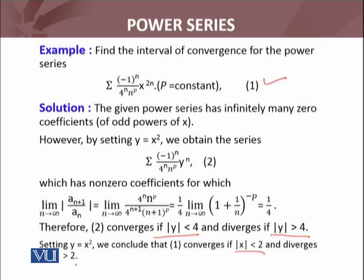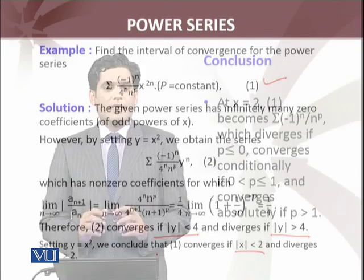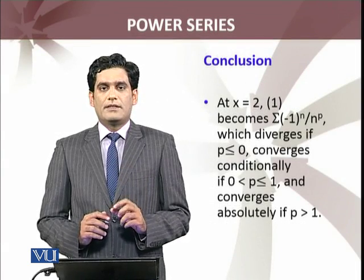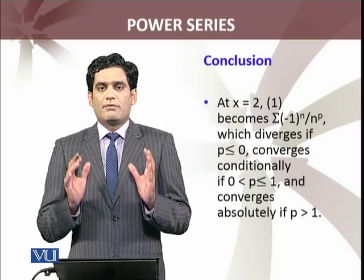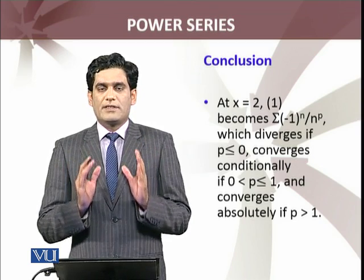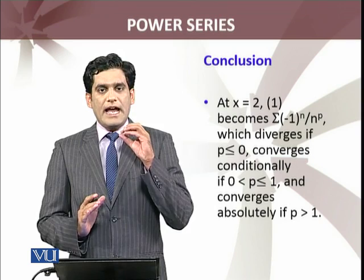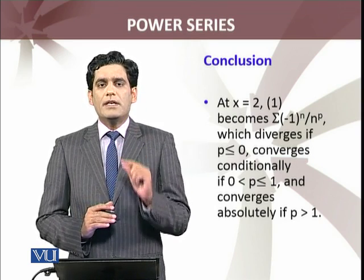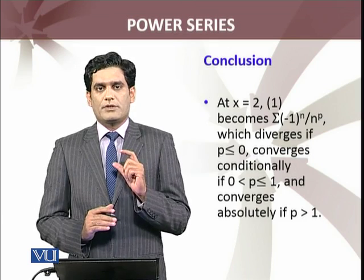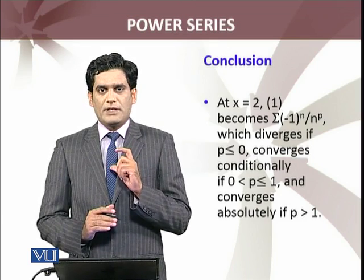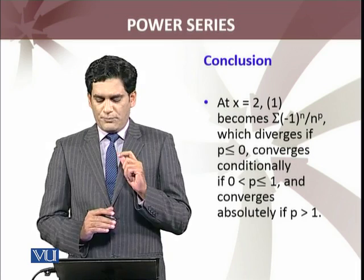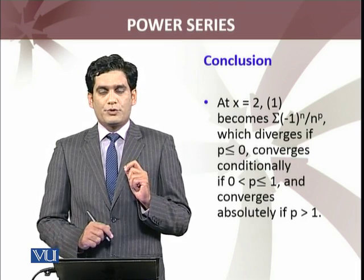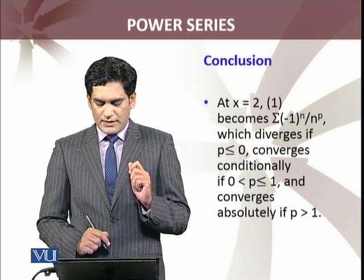What about at the endpoints? We have discussed that by finding the radius of convergence, you get the interval of convergence. We have discussed examples where at the endpoint of that interval, series may be convergent or may be divergent. Now this last example we discussed has endpoints x equals 2 and x equals minus 2.